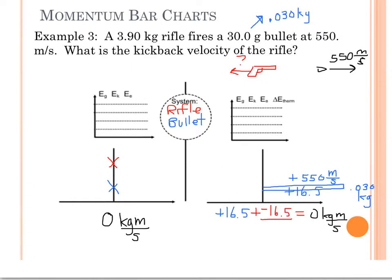The momentum bar for the rifle is going to look pretty different because the rifle has a very large mass, and it's going to have a much smaller velocity in order for its momentum to be the same but in opposite directions of that of the bullet. The rifle has a 3.9 kilogram mass, and we're trying to figure out what its velocity is, but we know that the area of this little rectangle, the momentum, has to be negative 16.5.